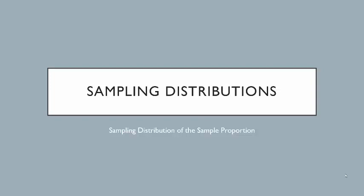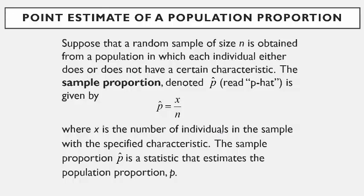In this lecture we're going to continue talking about sampling distributions by moving into the sampling distribution of the sample proportion. We'll start by defining exactly what a sample proportion is. The point estimate of a population proportion comes from a random sample of size n, where each individual either does or does not have a certain characteristic — like you either have brown hair or you do not.